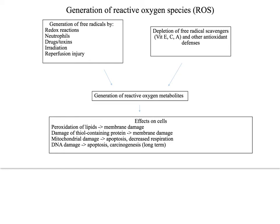Free radicals constitute an important mechanism of cell injury. They contribute to chemical radiation injury, oxygen and other gaseous toxicity, cellular aging, microbial killing by phagocytic cells, inflammatory damage, and tumor destruction by macrophages. Free radicals can be generated by redox reactions, neutrophils, drugs or toxins, irradiation, or even reperfusion injuries. Depletion of free radical scavengers and other antioxidant defenses also contributes to the generation of reactive oxygen metabolites.